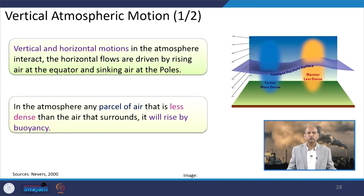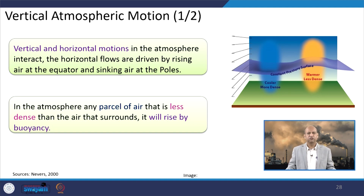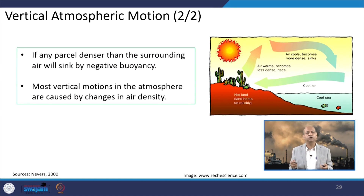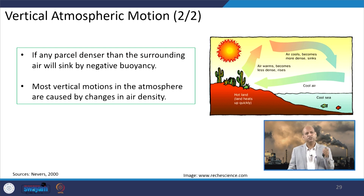Vertical atmospheric motion is also important — both horizontal and vertical motions matter, but vertical motion has its own role in mixing air. In the atmosphere, any parcel of air that is less dense than the surrounding air will rise because of buoyancy and less density — it is lighter, it goes up, and in cooler regions it comes down. If any parcel is denser than the surrounding air, it will sink — negative buoyancy. Most vertical motions in the atmosphere are caused by change in air density.